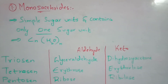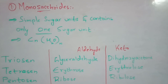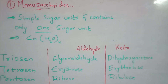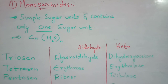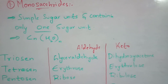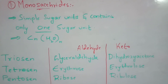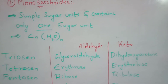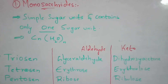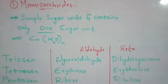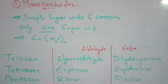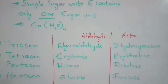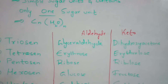Monosaccharides are the simple sugars of carbohydrates. As the name indicates, 'mono' means one — it consists of only one sugar unit, which includes glucose, fructose, or any aldehyde or keto group. The molecular formula of monosaccharides is CₙH₂ₙOₙ.